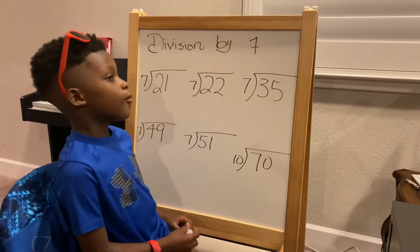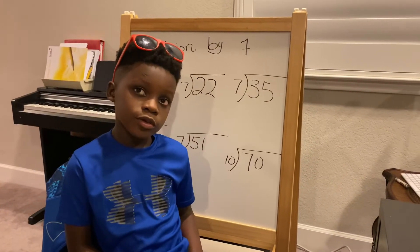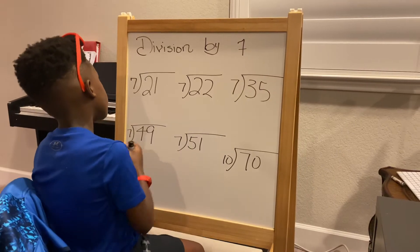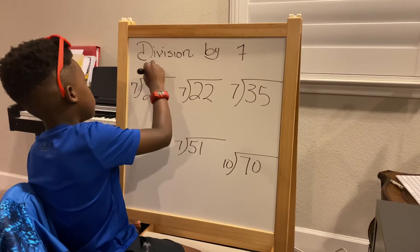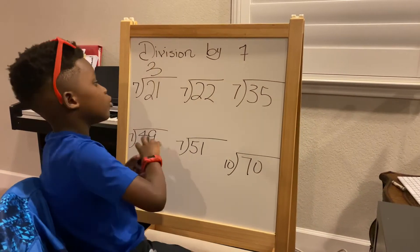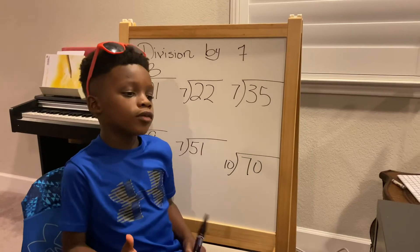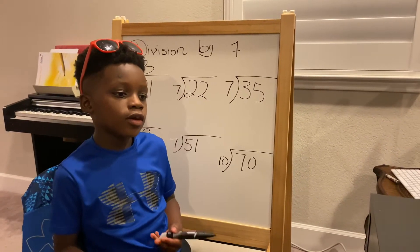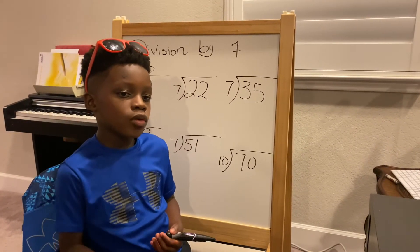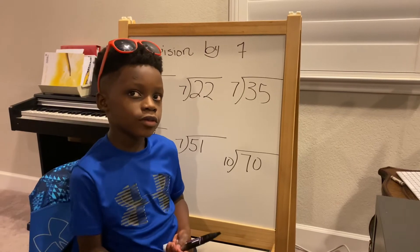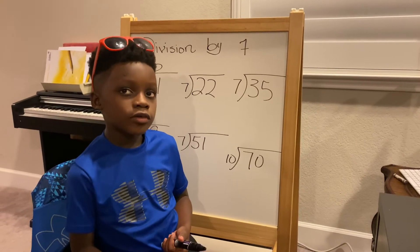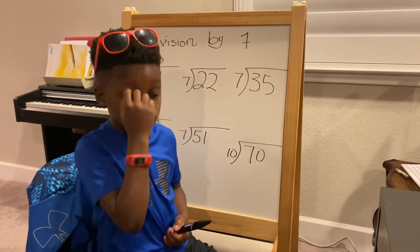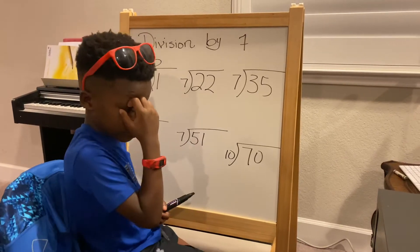How many groups of seven can make 21? Three. Why? Because if you count up, 21 is three groups of seven.